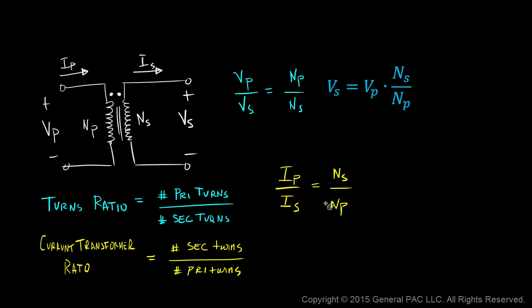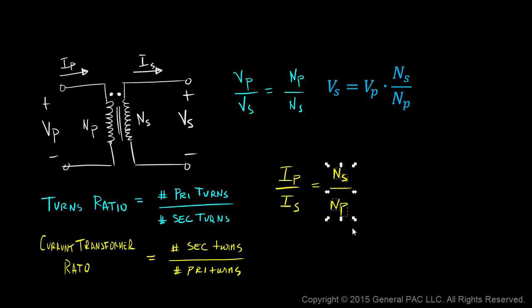When talking about currents, the primary current flowing into the primary winding is directly proportional to the number of secondary turns — it's flip-flopped, and it doesn't hold the same relationship as voltages.